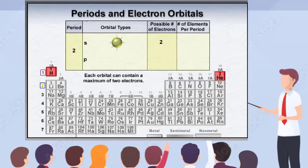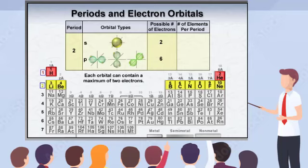In period two, electrons are added to the second energy level's S orbital as well as P orbitals. There are three P orbitals, which are oriented along three different axes in space. Therefore, period two has two elements with electrons filling the new S orbital, and six elements with electrons filling the three P orbitals. This explains why there are eight elements from lithium to neon in period two.